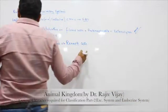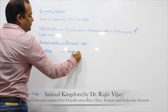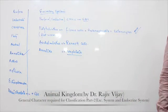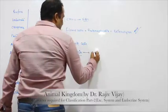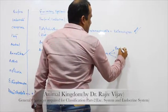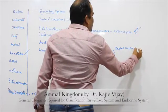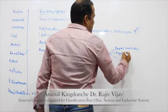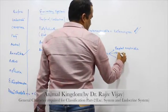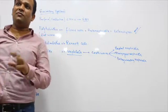In Aschelminthes it is renette cells. In case of Annelida, the excretory organs are called nephridia. In earthworms specifically, three types of nephridia are present: septal nephridia and pharyngeal nephridia.